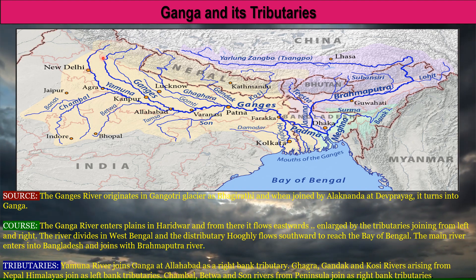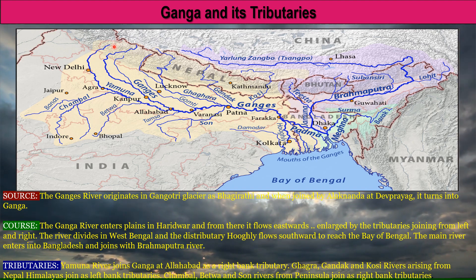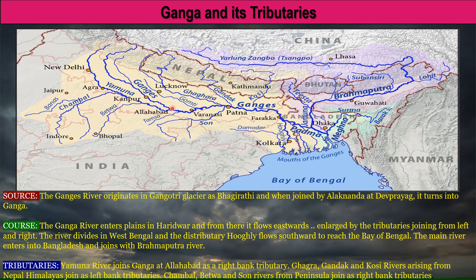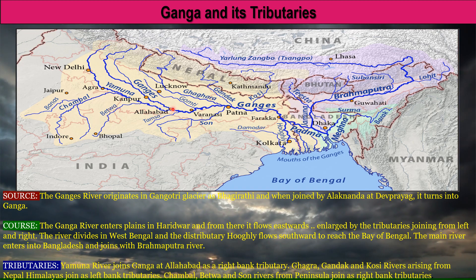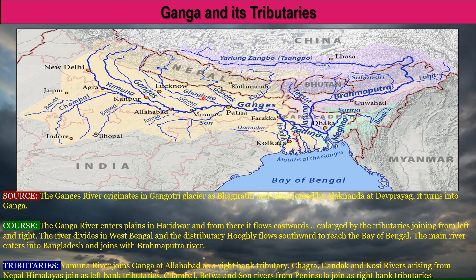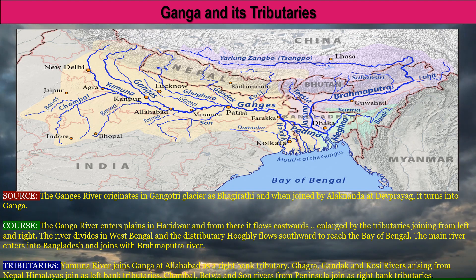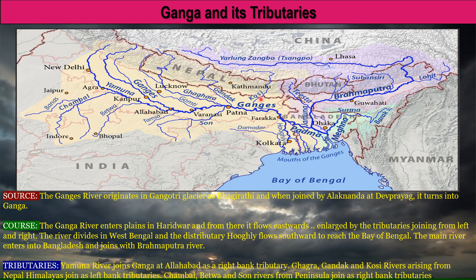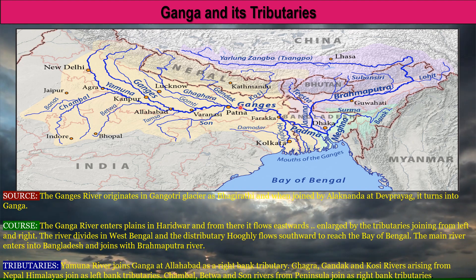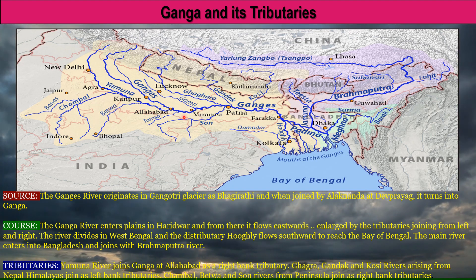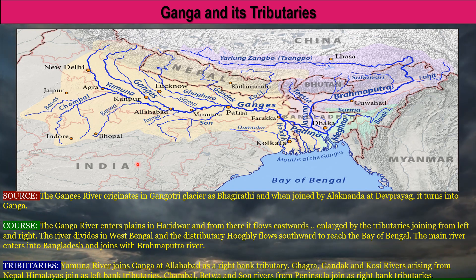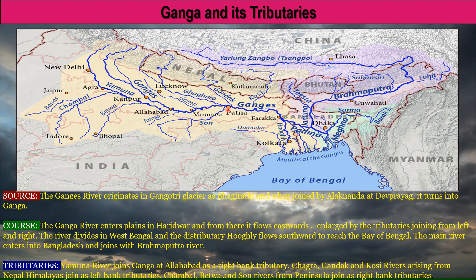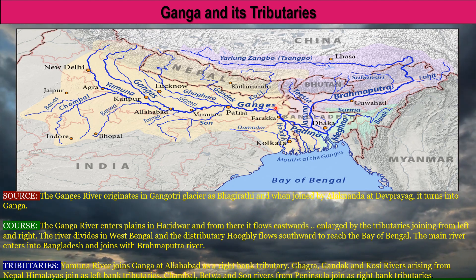The Yamuna River, originating at Yamunotri, joins the Ganga at Allahabad as a right bank tributary. Ghagra, Gandak and Kosi, arising from the Nepal Himalayas, join as left bank tributaries to the Ganga. Chambal, Betwa and Son from the Peninsular or the Indian Plateau join as right bank tributaries to the Ganga River.